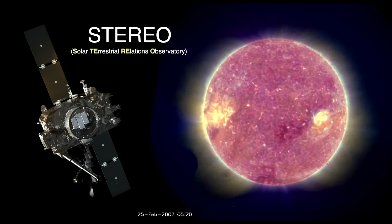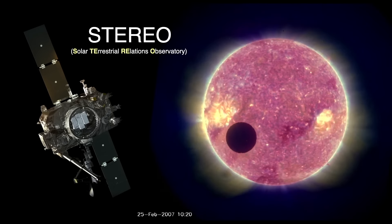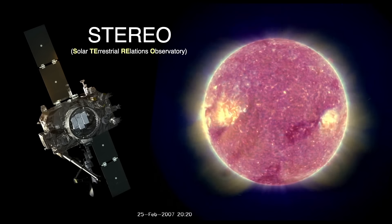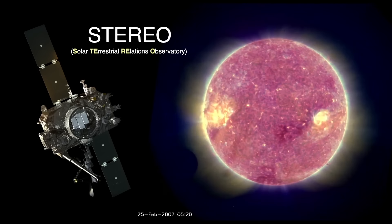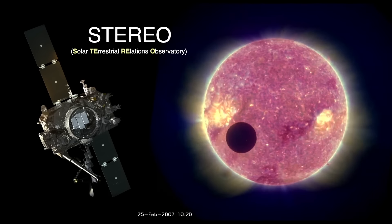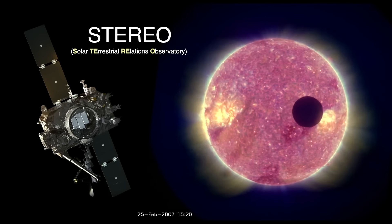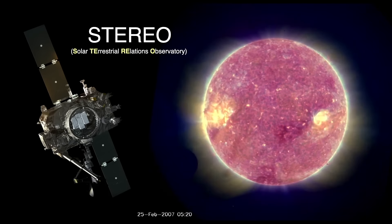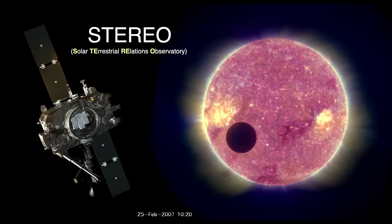This is a somewhat extreme eclipse of the sun. It was caught by the stereo spacecraft which trails the earth in our orbit. The spacecraft was about one million miles from earth, so the moon looks much smaller compared to the sun. I suppose one could call this an annular eclipse.